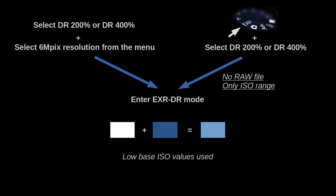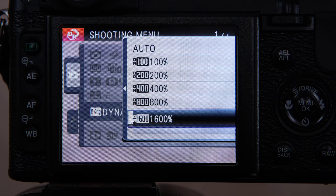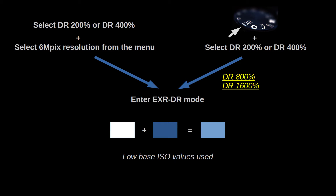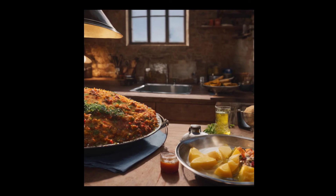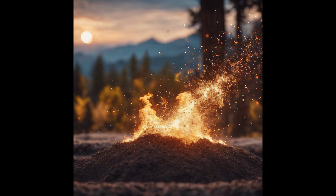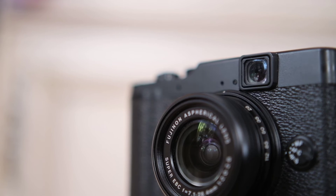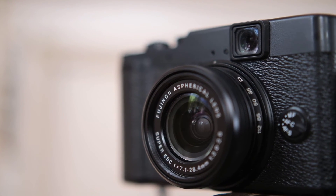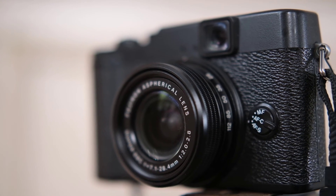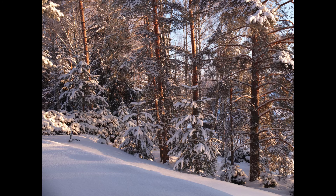Why bother with EXR DR if you lose some options? The major benefit is that when using EXR DR, you can go to dynamic range of 800% and even 1600%, which is pretty huge. However, 800% and 1600% are handled differently — the base ISO is elevated to 200 and 400 respectively, and there is post-capture tonal curve adjustment involved, so there's a small step toward cheating and expect an increase in noise. There's no such thing as a free lunch. Keeping all other settings the same, I took photos at various DR settings to see if the resolution loss is a reasonable price to pay.